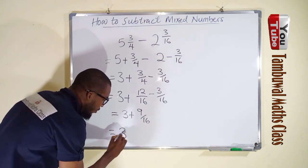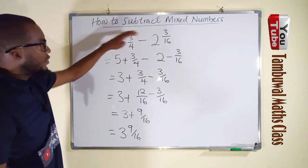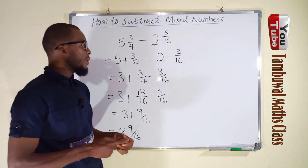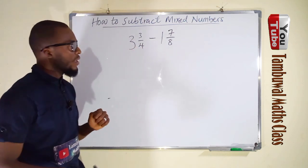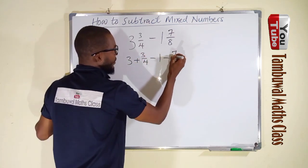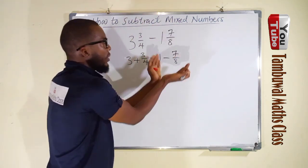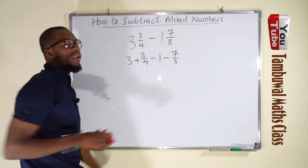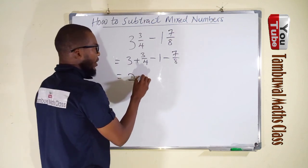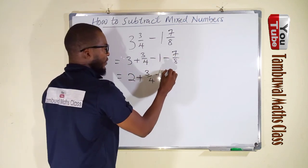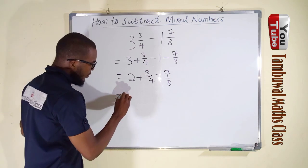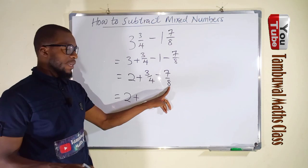Since 9/16 has no common factor and cannot be reduced, our final answer is 3 and 9/16. You can subtract this from this without transforming them into improper fractions. Here is another example: we want to subtract 1 and 7/8 from 3 and 3/4. This is 3 plus 3/4 minus (1 plus 7/8). We are subtracting the entire right-hand bundle. So 3 minus 1 gives us 2, and we have plus 3/4 minus 7/8.